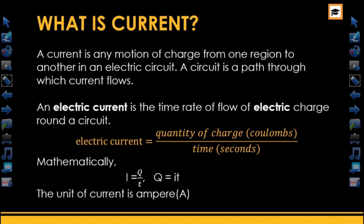An electric current can be defined as the time rate of flow of electric charge around a circuit. Current is equal to quantity of charge over time — that is, I equals Q over T, and Q equals IT. The unit of current is the ampere.